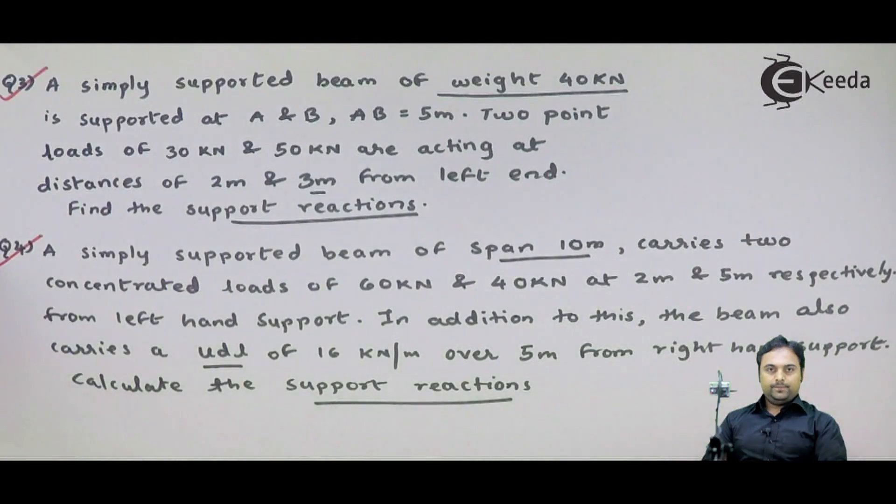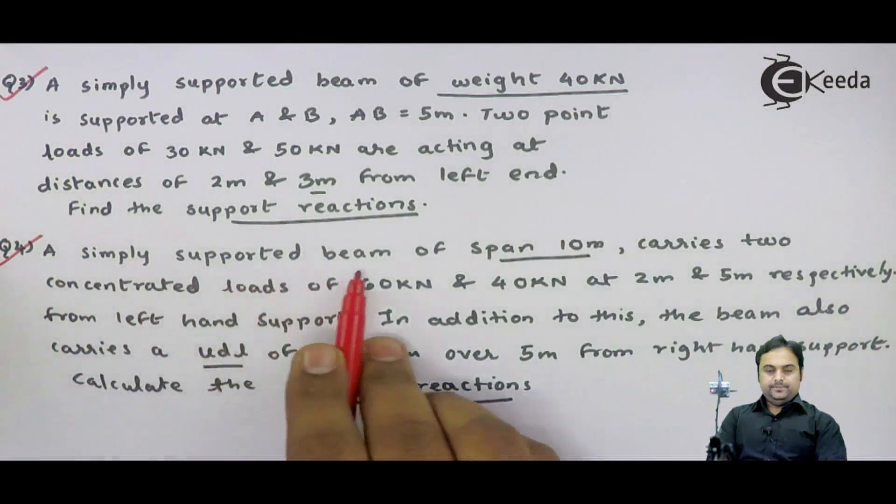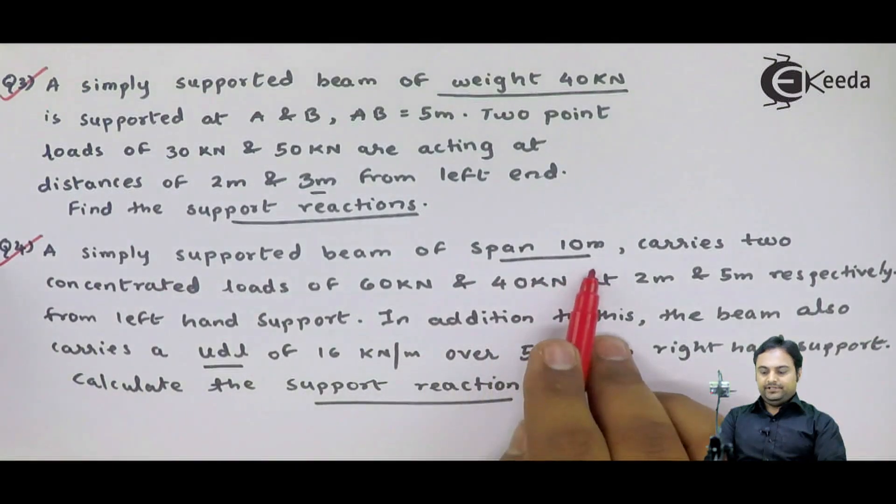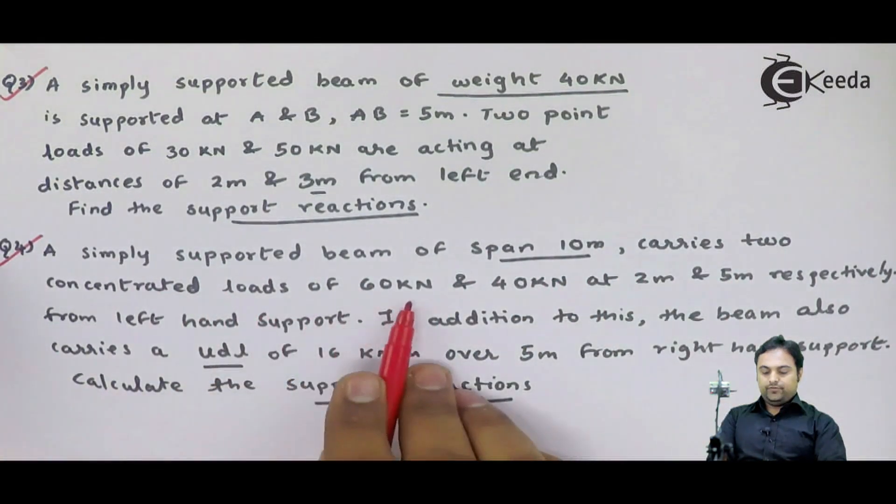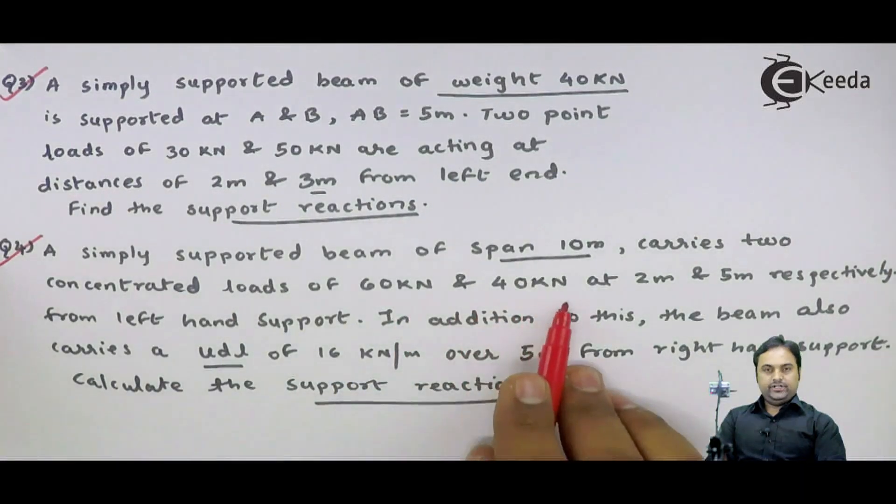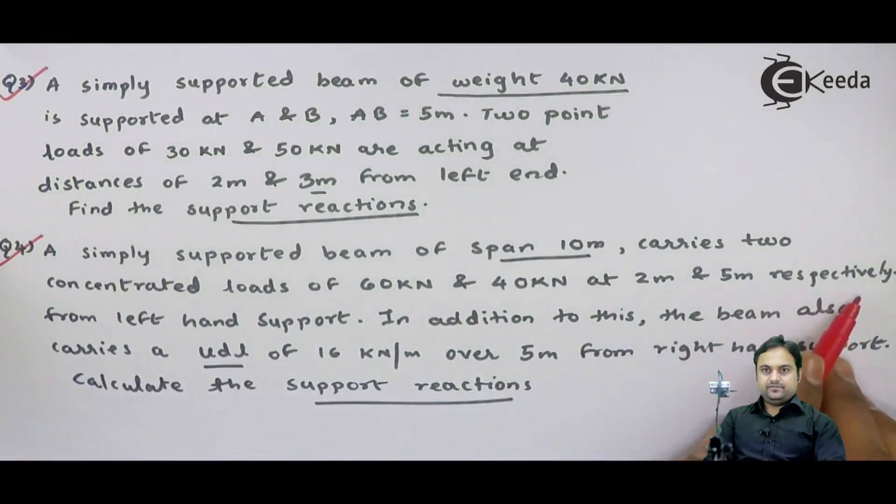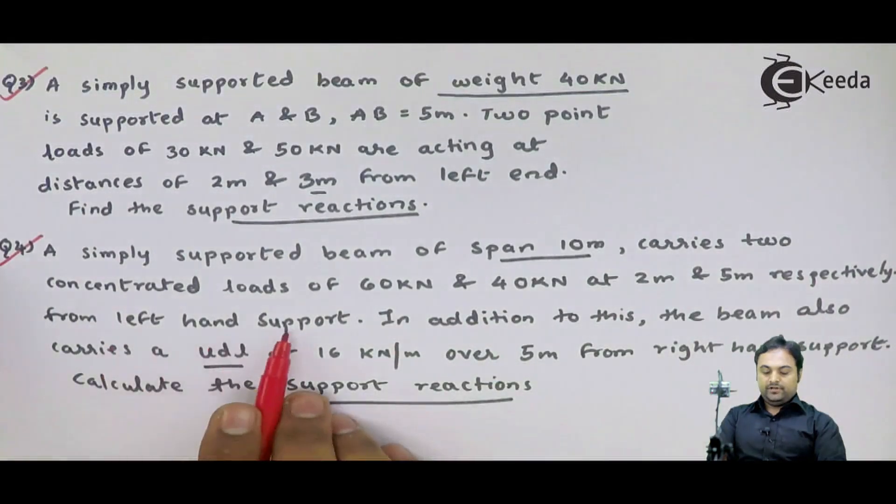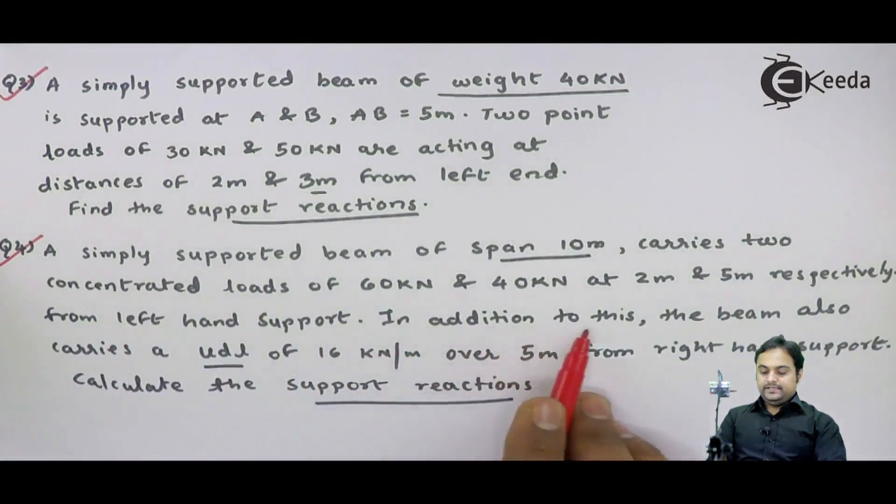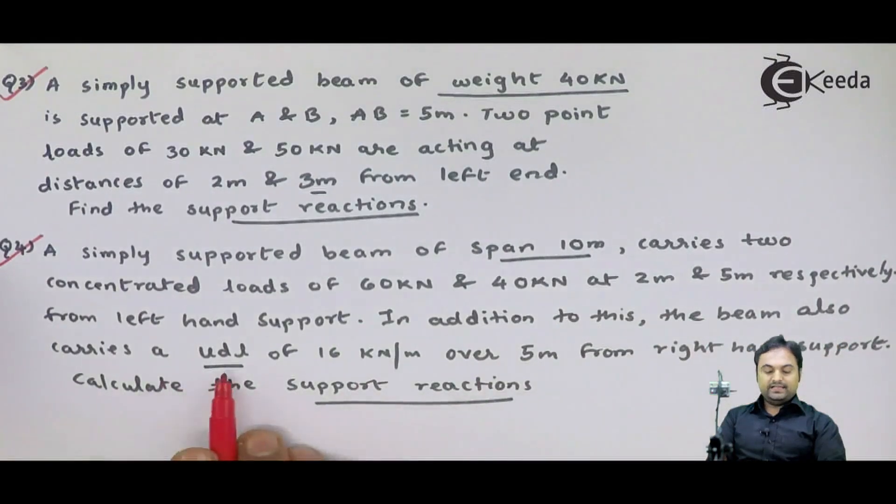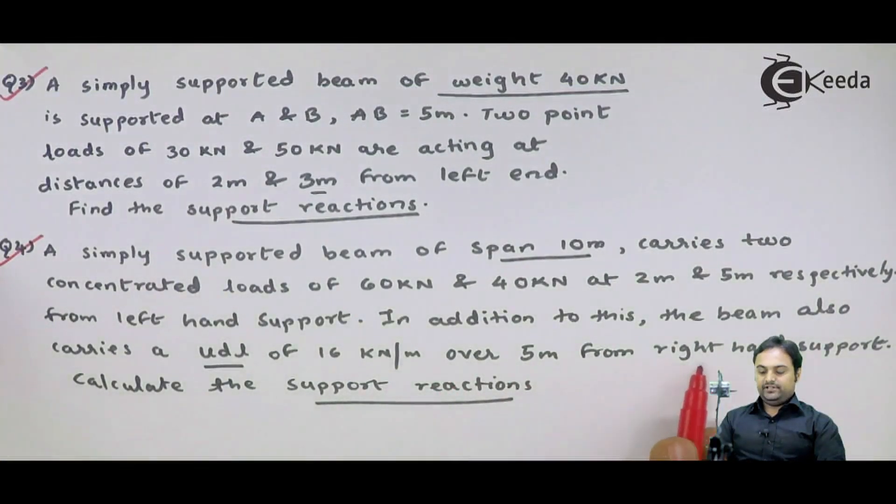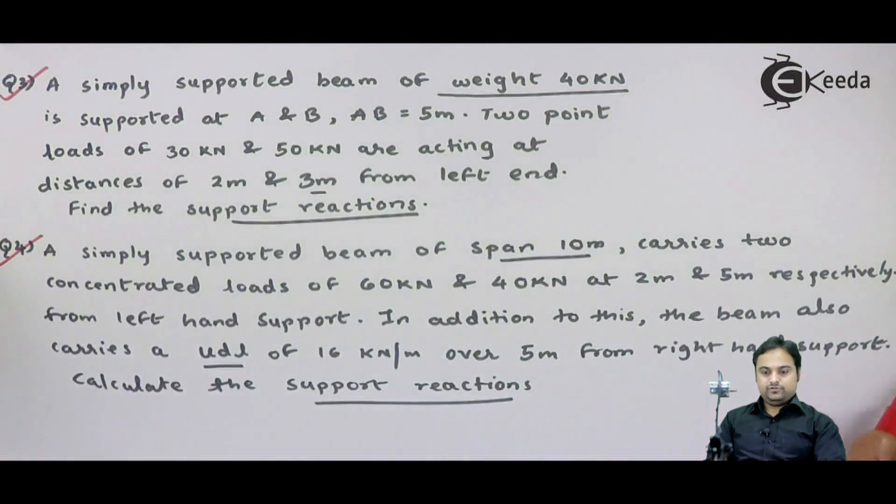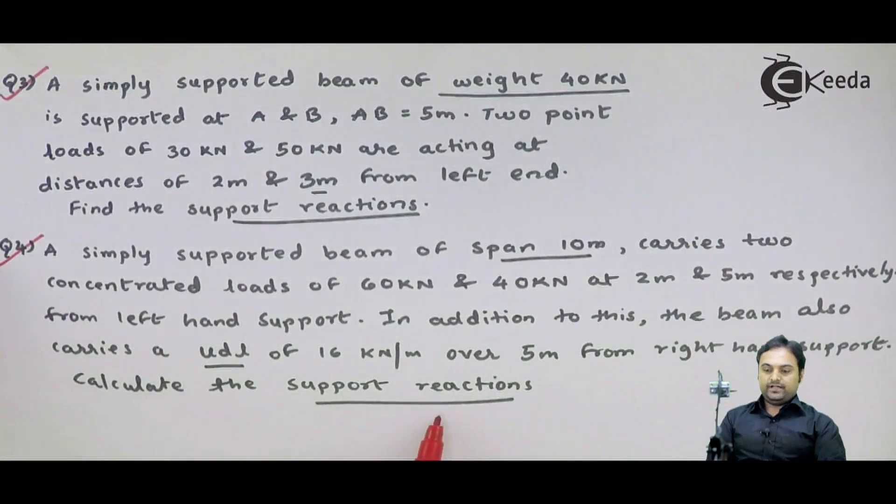Question number 4. A simply supported beam of span 10 meters carries two concentrated loads of 60 kilonewton and 40 kilonewton at 2 meters and 5 meters respectively from left-hand support. In addition to this, the beam also carries a uniformly distributed load (UDL) of 16 kilonewton per meter over 5 meters from right-hand support. Calculate the support reactions.